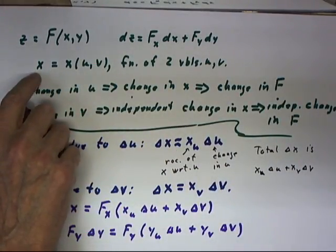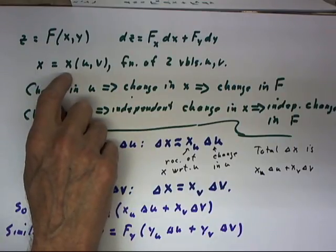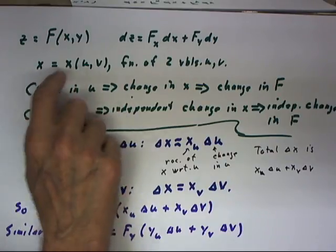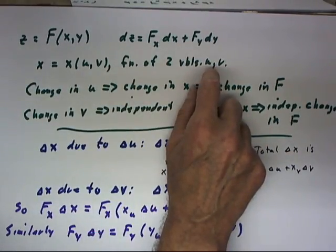Now if x in turn is a function of two other variables, say u and v, so x is a function of two variables u and v.